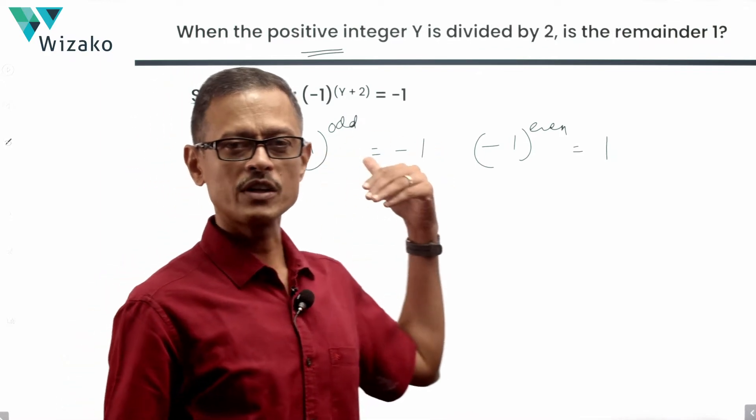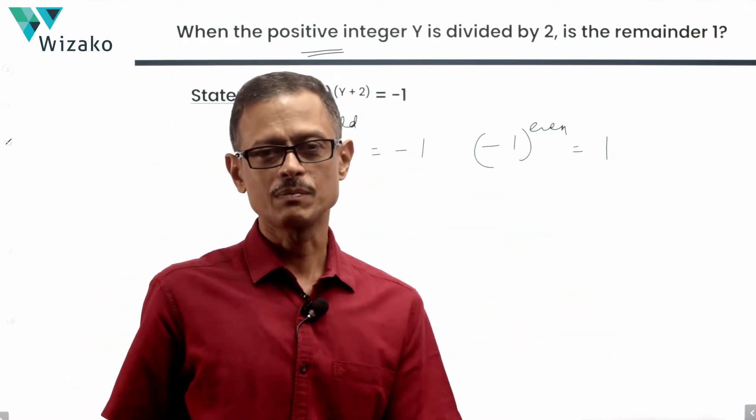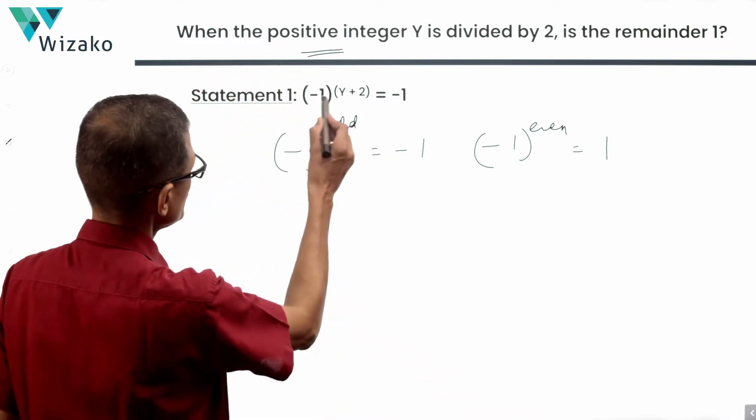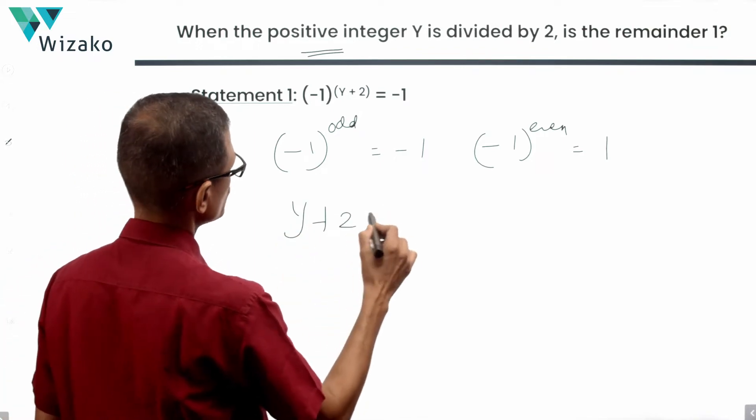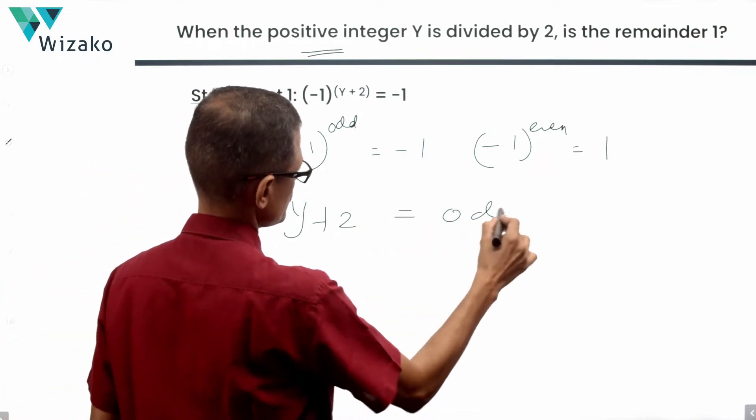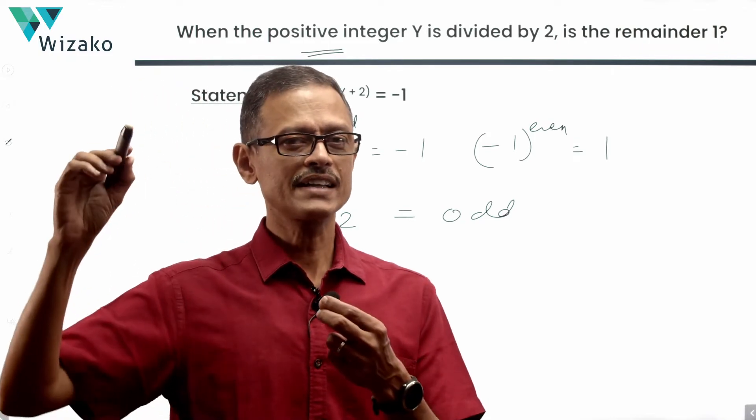Properties of negative numbers: -1 raised to an odd power will be -1. -1 raised to an even power is equal to +1. -1 cubed is -1. -1 raised to the power of 11 is -1. -1 squared is +1. -1 raised to the power of 10 is +1. We know that (-1)^(Y+2) = -1. Therefore, we can infer Y+2 is essentially an odd number, because any time -1 is raised to an odd power is when you're going to get -1.